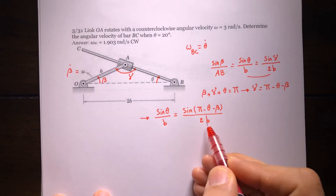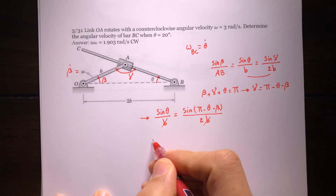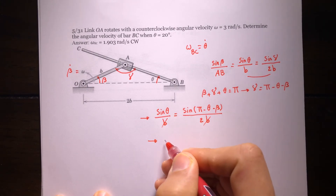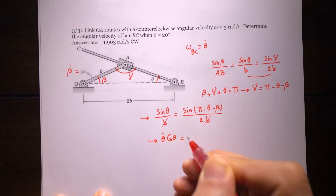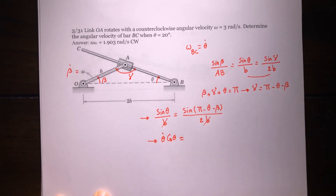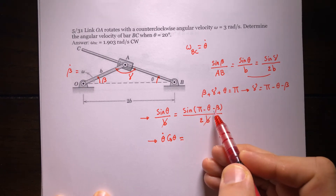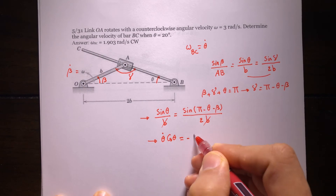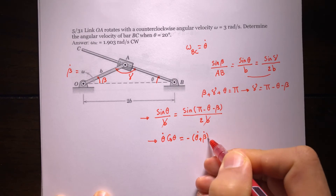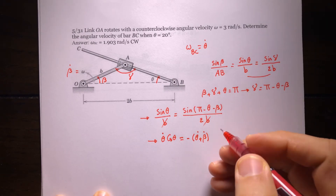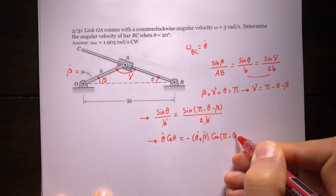Taking the derivative: the derivative of sine of theta gives theta-dot times cosine of theta. On the right side, the derivative of the inside of the sine is negative theta-dot minus beta-dot, so we get negative (theta-dot plus beta-dot) times cosine of (pi minus theta minus beta).